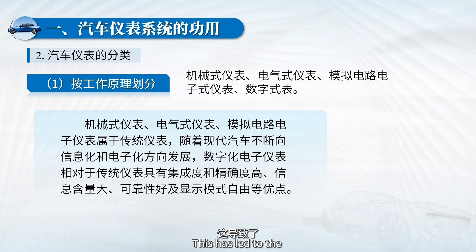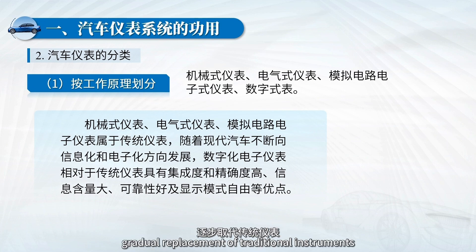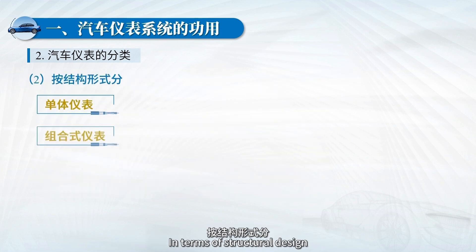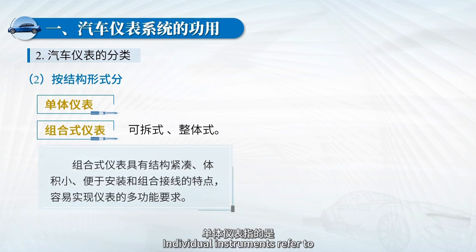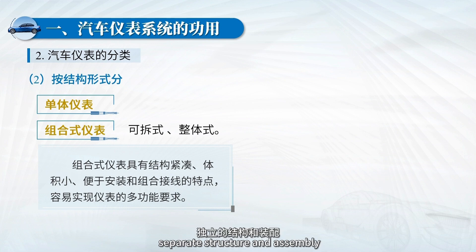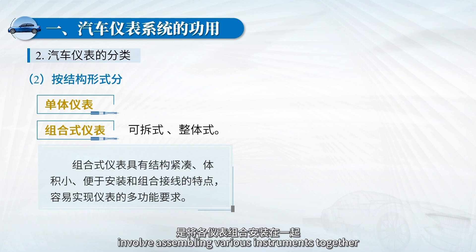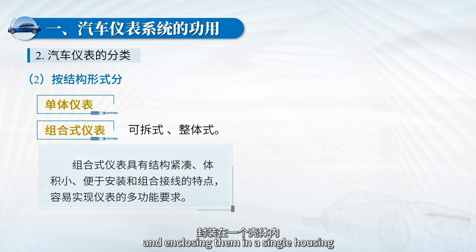This has led to the gradual replacement of traditional instruments. In terms of structural design, there are individual instruments and combination instruments. Individual instruments refer to each instrument having its own separate structure and assembly. Combination instruments involve assembling various instruments together and enclosing them in a single housing.